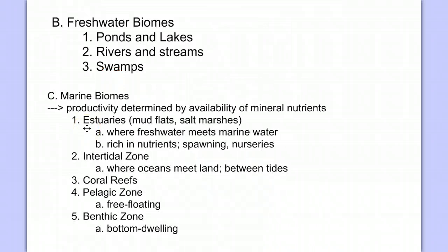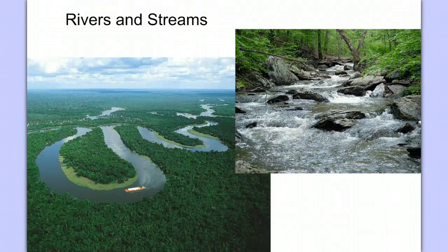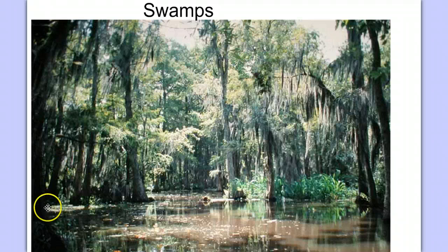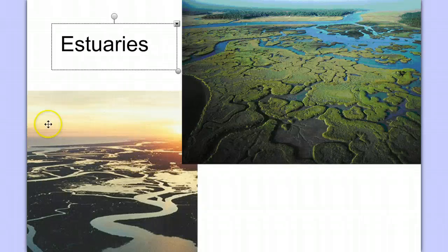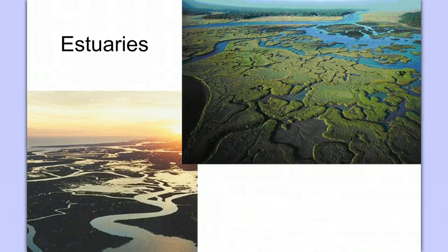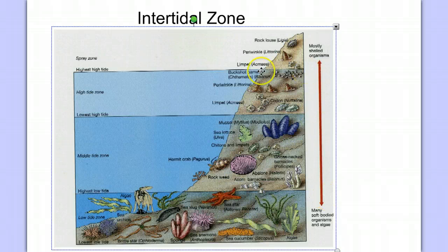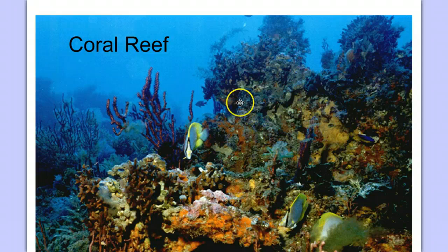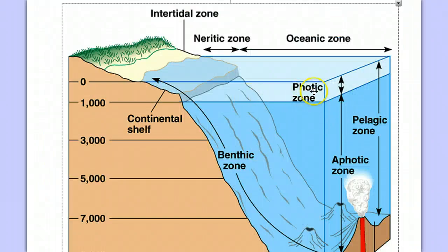Now let's look at our aquatic biomes. We have our freshwater biomes — ponds, lakes, rivers, and streams — as well as swamps. And then in our marine biomes, we have estuaries, the mudflats and salt marshes, which are a very important basis of the food chain in the ocean. Then we have the intertidal zone, which is the zone between the high tide and the low tide. We have coral reefs, which are a very important part of our ecosystem biomes. And then we have the open ocean zones: the photic zone at the top layer where light penetrates, the pelagic zone as the open water, and the benthic zone — the bottom of the ocean — as an aquatic marine biome.